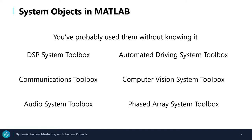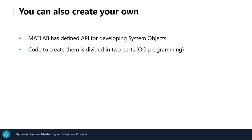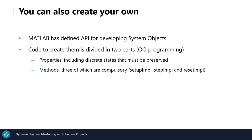Now you may be saying to yourself: but I don't have any of these toolboxes — how can I use system objects? Well, you can create your own. MATLAB has a defined API for developing system objects. The code to create them is divided into two parts, the same as an object-oriented approach. The first is the properties that include the discrete states that must be preserved, and the second are the methods. Three of the functions are compulsory: setup implementation, step implementation, and reset implementation.